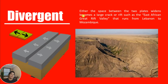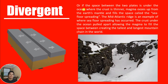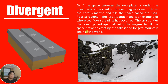Either the space between the two plates widens and becomes a large crack or rift — such as the East African Great Rift Valley that runs from Lebanon to Mozambique — or, if the space is under the ocean where the crust is thinner, magma oozes up from the earth's mantle and fills the space, which is called seafloor spreading. The Mid-Atlantic Ridge is an example where seafloor spreading has occurred, where the crust under the ocean falls apart allowing the magma to fill the space, creating the tallest and longest mountain chain in the world.